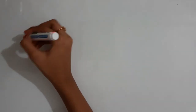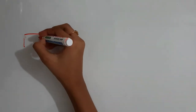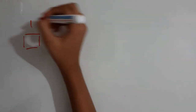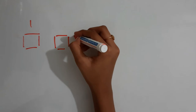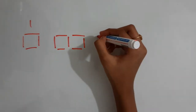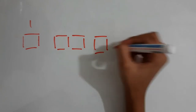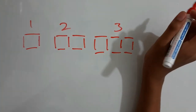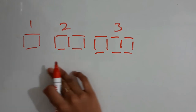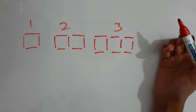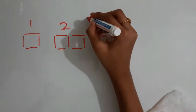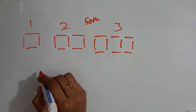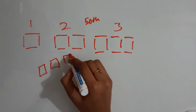Consider these four lines as matchsticks. This is the first figure, this is the second figure, and this is the third figure. We can go on to 50,000 or 10,000, but it's very difficult if you get a question like: what is the 50th figure? You can't keep drawing boxes all the way to 50.